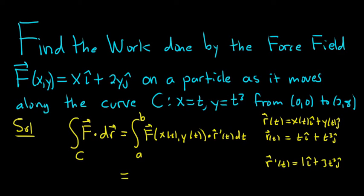So rewriting our definite integral, we're going from a to b. Now what's a and what's b? Well you'll notice x is t. So this is going to be our t. So from 0 to 2. So we're going to integrate from 0 to 2.